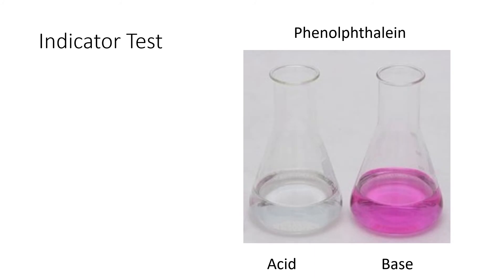The third test we're going to do is an indicator test. Just like the substance that coats litmus paper, there are many other chemicals that change colors depending on whether they are in an acid or a base solution. The one we're going to use is phenolphthalein. Phenolphthalein in the presence of acid is colorless, but in the presence of base achieves a neon pink color. So we're going to use this as a test to distinguish between a substance that is an acid and a substance that is a base.